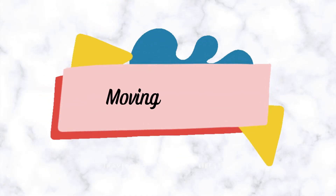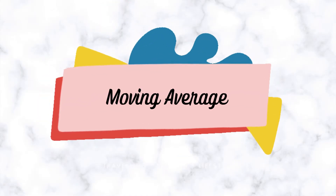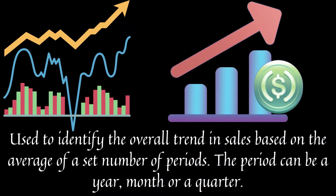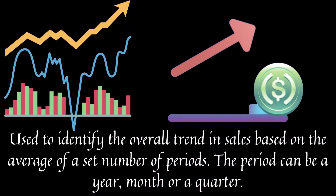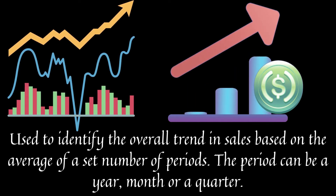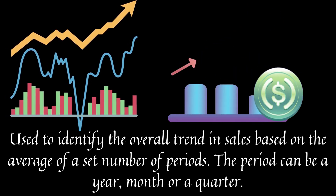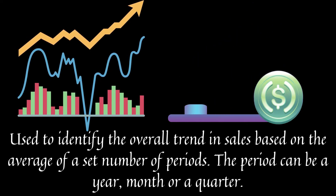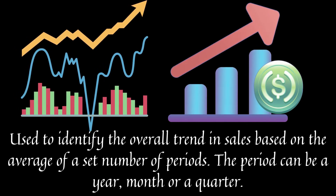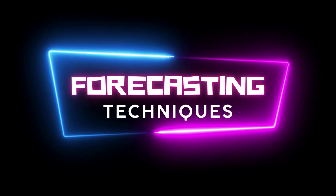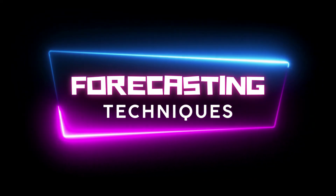The final technique we'll be looking at is the moving average. This is used to identify the overall trend in sales based on the average of a set number of periods. The period can be a year, month, or a quarter. This will help to make predictions for future sales results.